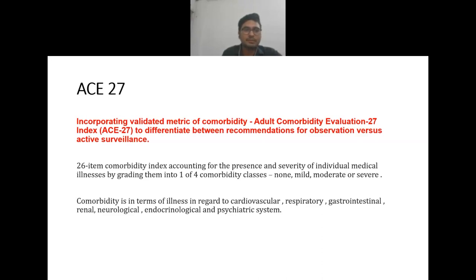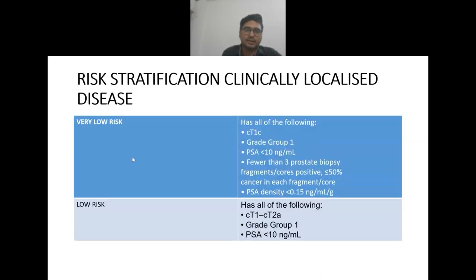The ACE-27 is a 26-item comorbidity index accounting for the presence and severity of individual medical illness by grading them into one to four comorbidity classes: none, mild, moderate, or severe. Comorbidities are assessed in regard to the cardiovascular, respiratory, gastrointestinal, renal, neurological, endocrine, and psychiatric systems.